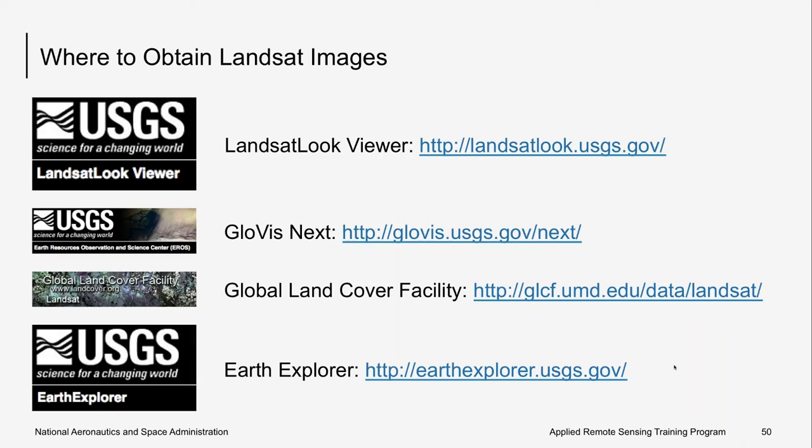There are many different websites where you can obtain Landsat data, and those are listed here. Sometimes it's confusing because there are so many sites to find the same type of data, so it's a good idea to look at the various places and decide how you prefer to view and download data. Examples include the Landsat Look Viewer, Glovis Next, the Global Land Cover Facility, and Earth Explorer.